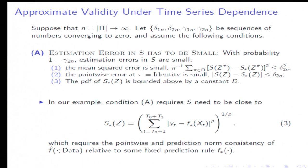This function, this machine learning prediction rule, has to be close to a fixed prediction rule F star that does not depend on the data. So in some sense, this F hat has to be consistent for some function F star. This does not have to be the true regression function. This just has to be consistent for something. And we require the point-wise and prediction norm consistency. This is just a more general statement of what I just said for more general statistics.